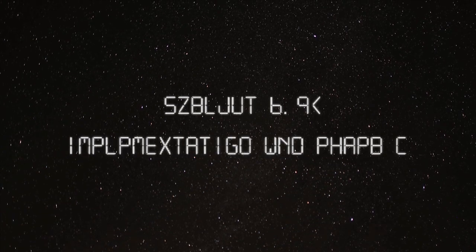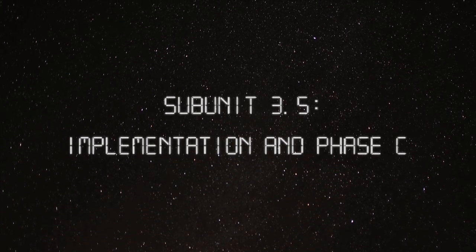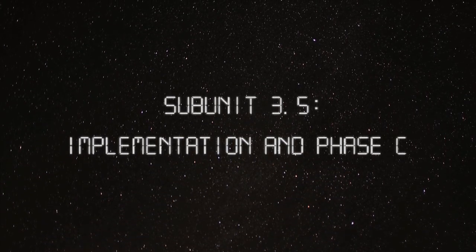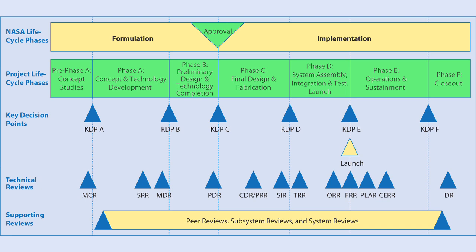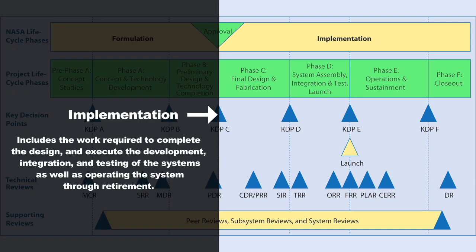Subunit 3.5, Implementation and Phase C. Implementation includes the final phases of the system lifecycle. During implementation, the system design is completed, the system components are built and purchased, the system is integrated and tested, and then operated throughout its defined lifespan.